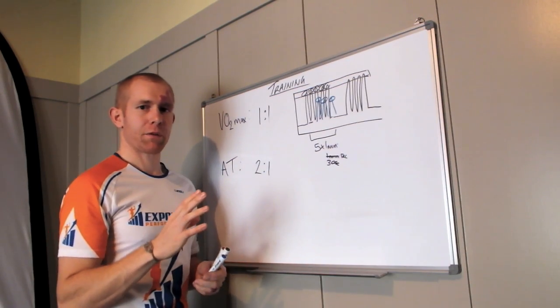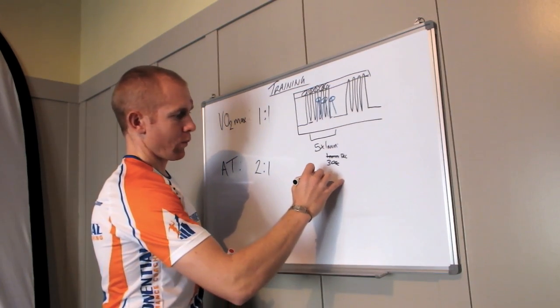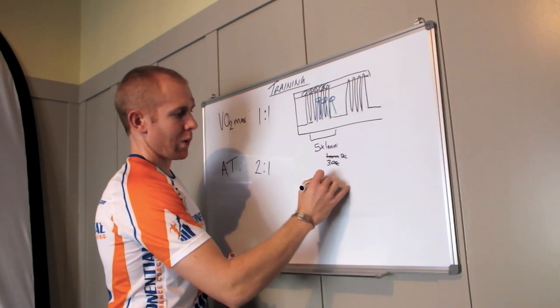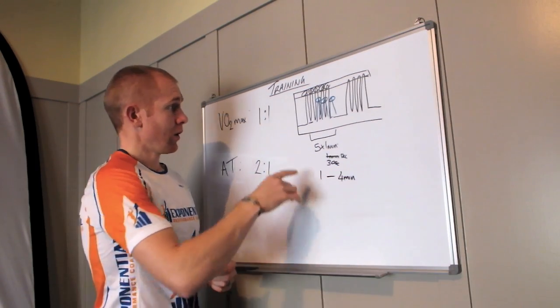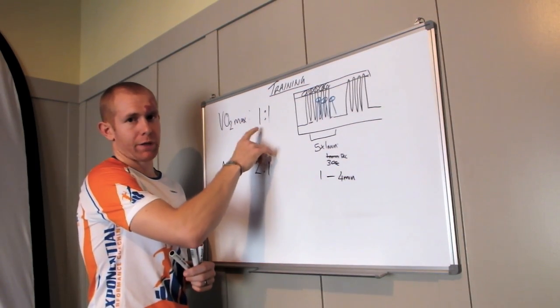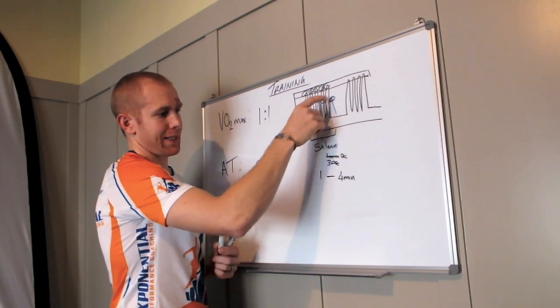So the key thing with VO2max development is an interval that's somewhere between one to four minutes with a one-to-one work-to-recovery ratio and really focusing on the intensity.